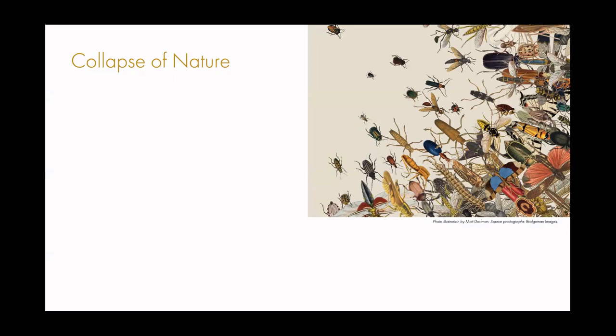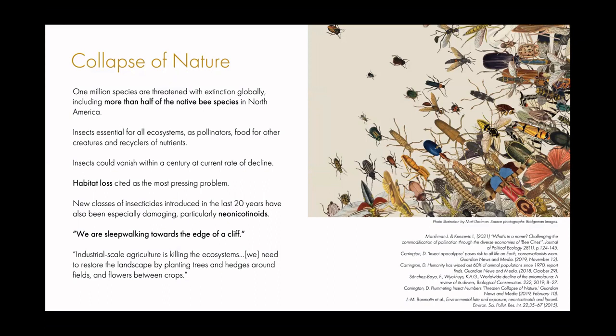There are one million species on the planet threatened with extinction globally, including more than half of the native bee species in North America. Insects are essential for all ecosystems and could vanish within a century at the current rate of decline. Habitat loss is the most pressing problem, as well as new classes of insecticides — especially neonicotinoids. To quote one scientist: we are sleepwalking towards the edge of a cliff.